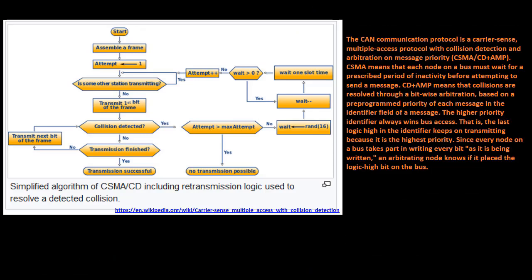The CAN communication protocol is a carrier sense, multiple access protocol with collision detection and arbitration on message priority. CSMA means that each node on a bus must wait for a prescribed period of inactivity before attempting to send a message. CD plus AMP means that collisions are resolved through a bitwise arbitration based on a pre-programmed priority of each message in the identifier field of a message. The higher-priority identifier always wins bus access.